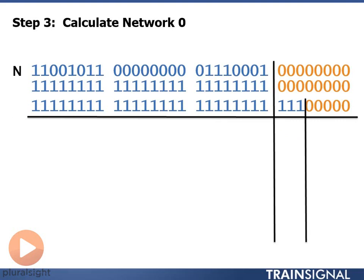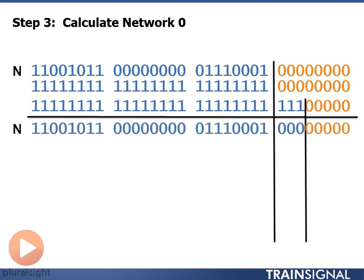So to calculate network zero, what I do is I actually put zero in the network portion of my address where those borrowed bits are. So I borrowed those three bits from my host portion, move them into network portion, now what I can do to calculate network number zero is put zero in that borrowed bit section.